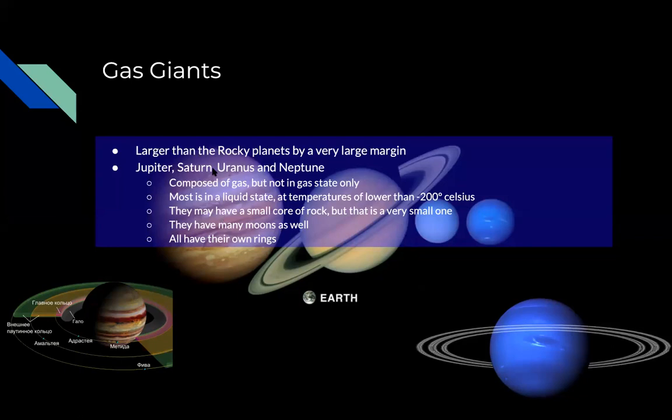Jupiter, Saturn, Uranus, and Neptune — those are the four gas giants.